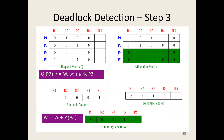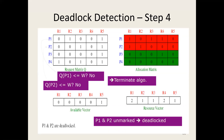We now have P1 and P2 remaining. P1 and P2 cannot be satisfied — the available matrix W is 0, 0, 0, 1, 1. P1 requires 0, 1, 0, 0, 1 which cannot be satisfied. P2 has 0, 0, 1, 0, 1 which is also not possible. So the temporary vector W cannot satisfy the requests for P1 and P2, meaning P1 and P2 will be in a deadlock.